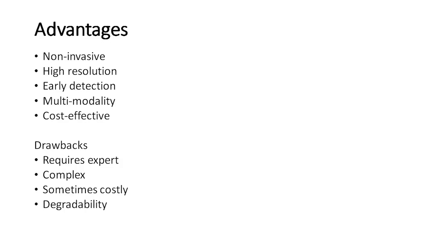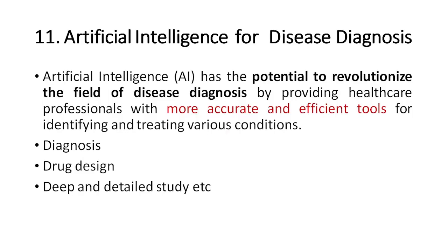Some scans like CT and MRI require the patient to remain completely still. For children, anesthesia may be necessary so they stay still during imaging. Any movement — for example, if the head moves during a brain scan — will cause errors in the image. The next class will discuss artificial intelligence for disease diagnosis.